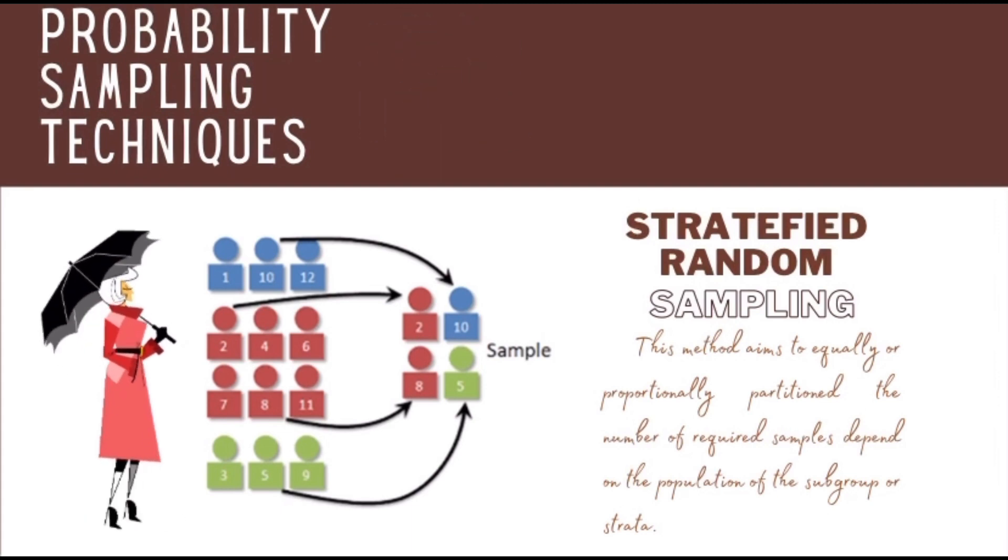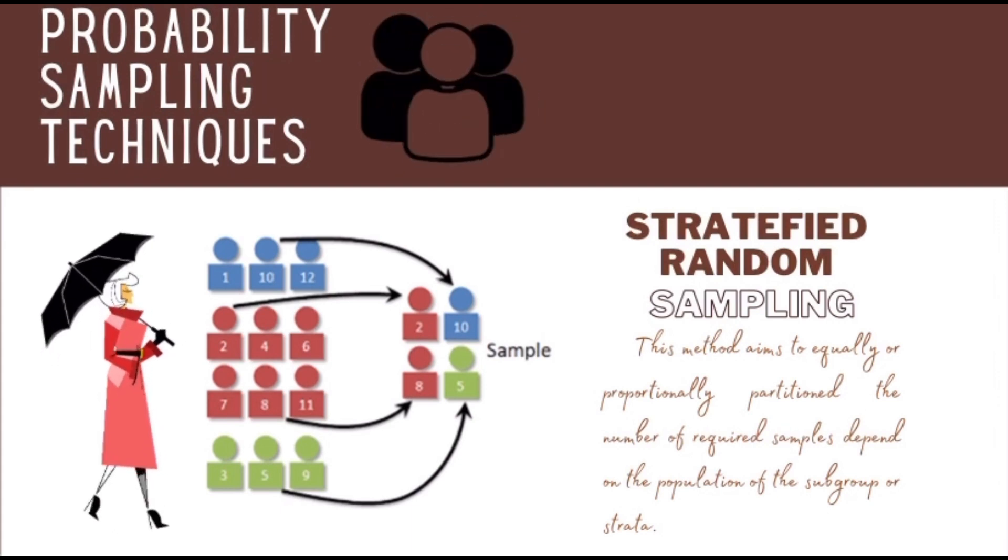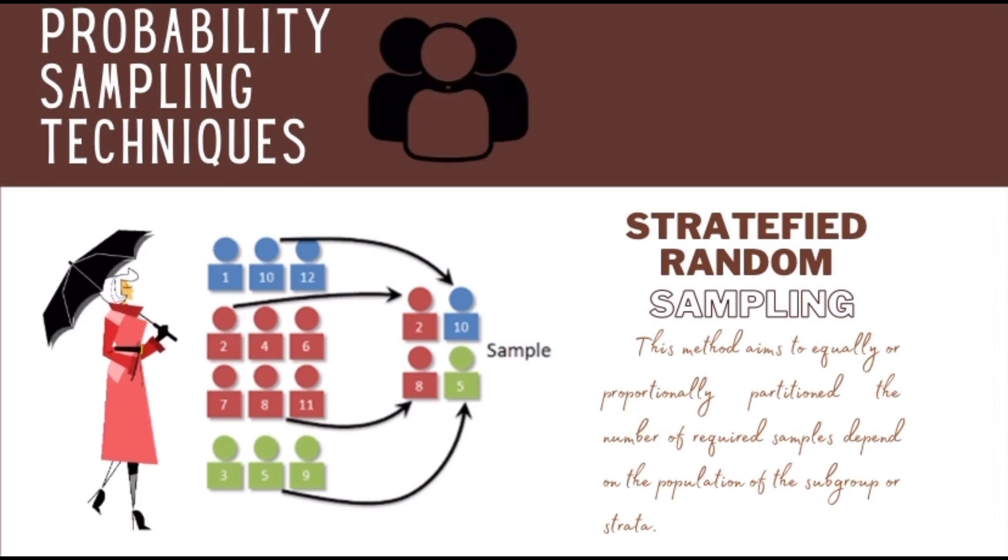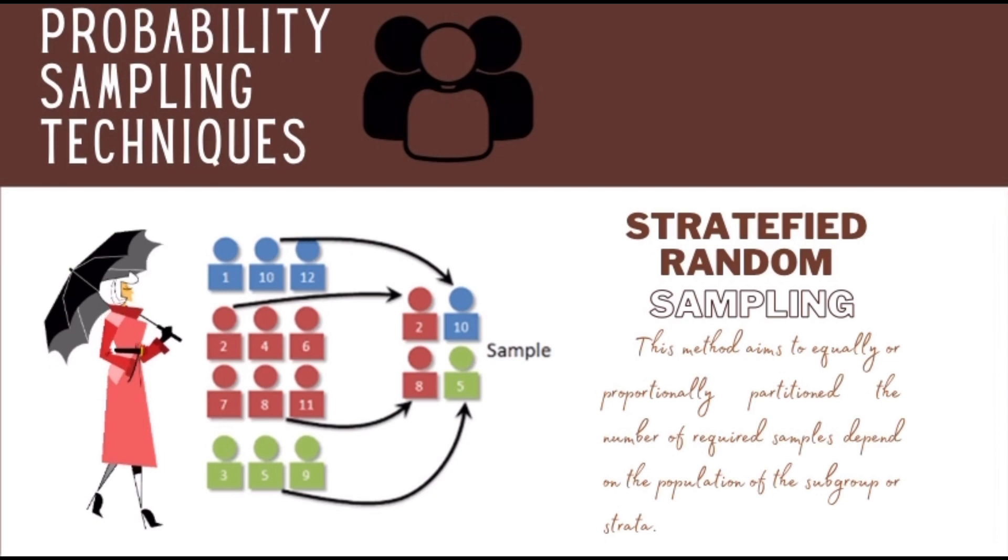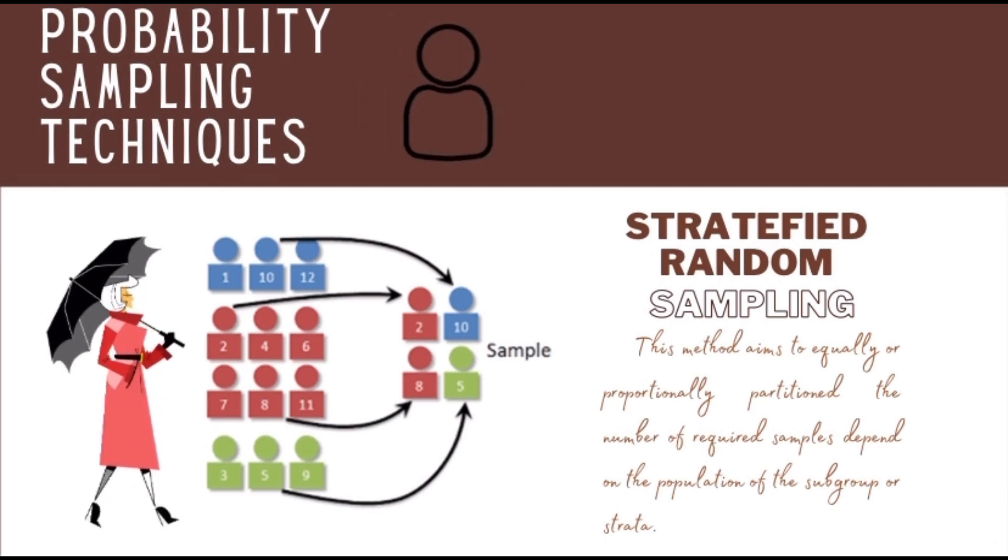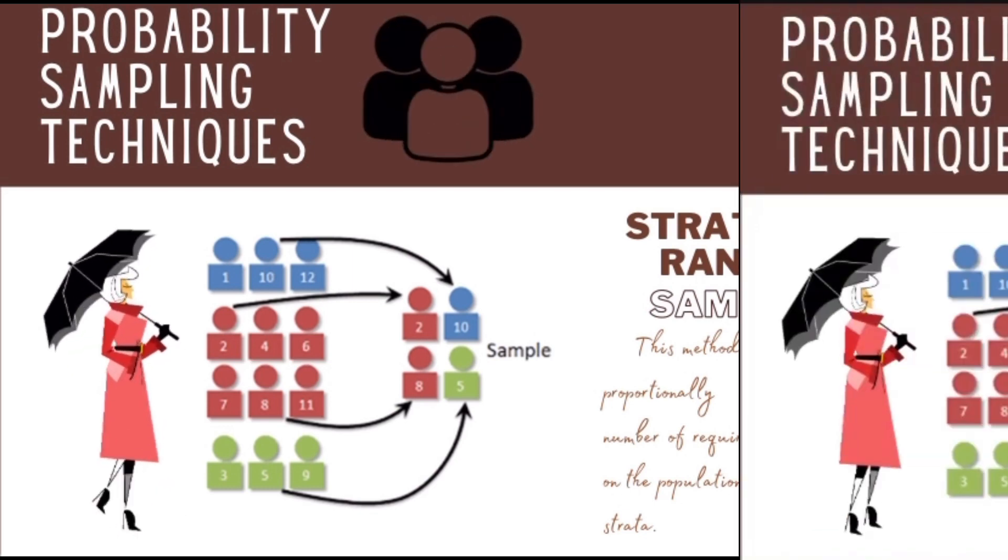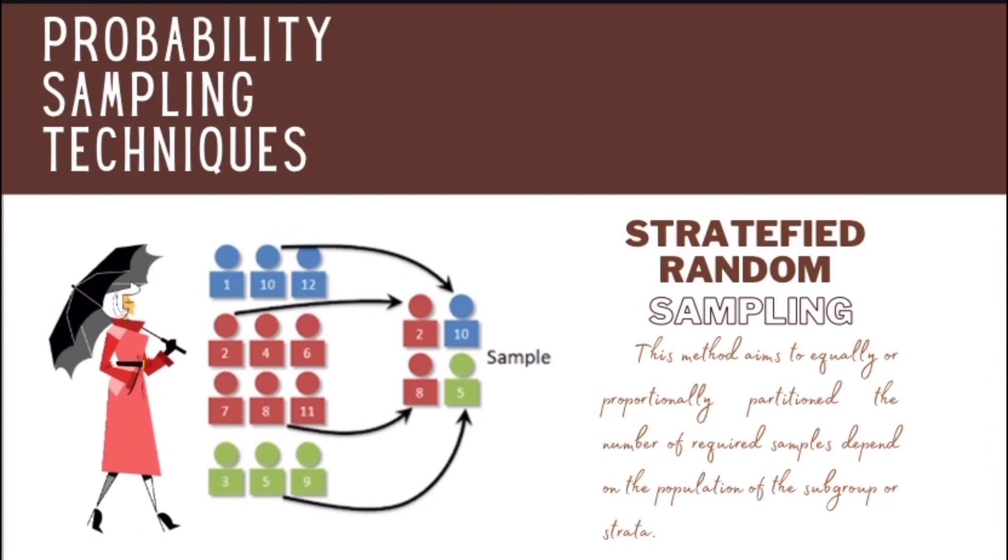Another example: in a study of stroke outcomes, we may stratify the population by sex to ensure equal representation of men and women. The study sample is then obtained by taking equal sample sizes from each stratum. In this sampling, it may also be appropriate to choose non-equal sample sizes from each stratum. In this sampling technique, it improves the accuracy and representativeness of the result by reducing sampling bias.